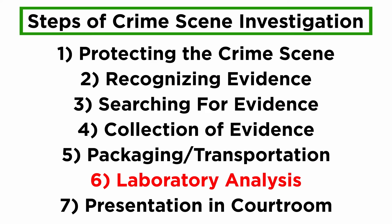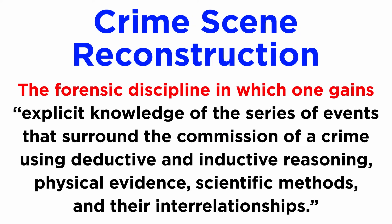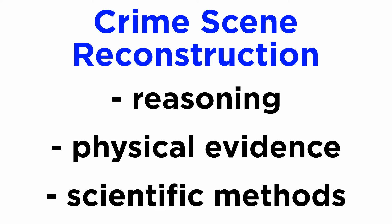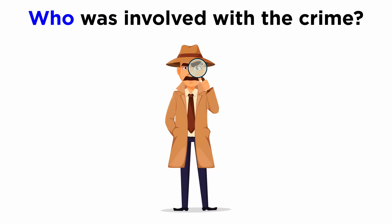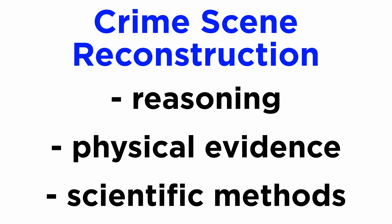This is why we are studying reconstruction as a part of evidence analysis. Now that we understand the logic behind CSR, let's look at its definition. CSR is defined as the forensic science discipline in which one gains explicit knowledge of the series of events that surround the commission of a crime using deductive and inductive reasoning, physical evidence, scientific methods, and their interrelationships. From this definition, we can understand that there are three major pillars that form the foundation of CSR: reasoning, physical evidence, and scientific methods. It is by studying their relationships that an investigator could be able to answer questions like who was involved with the crime, and why, when, and how was the crime committed.